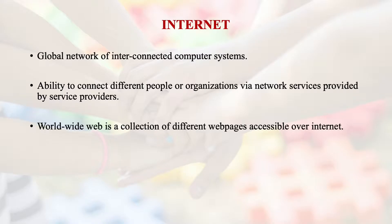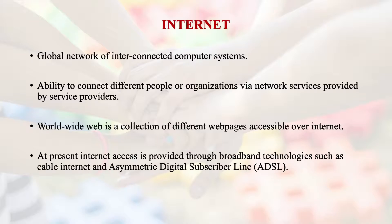The World Wide Web (www) is a collection of different web pages accessible over the internet. At present, internet access is provided through broadband technologies such as cable internet and ADSL — that is, asymmetrical digital subscriber line. We won't go into these technical details, but now we know what the internet is: it is a global network through which we are connected through different computer systems.